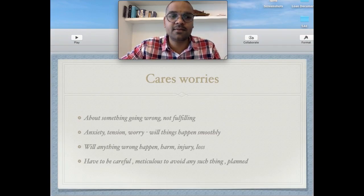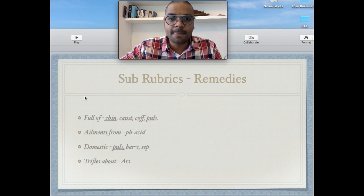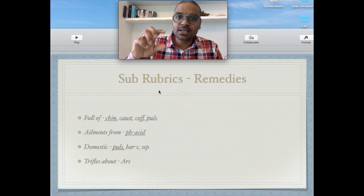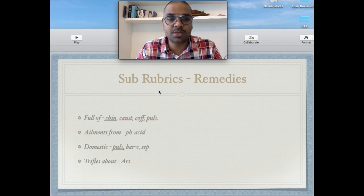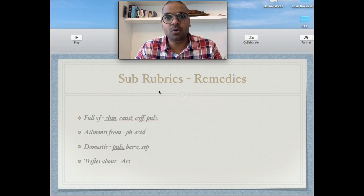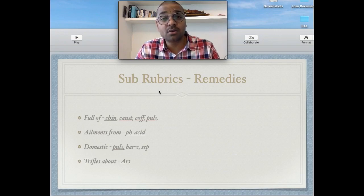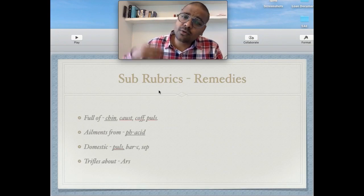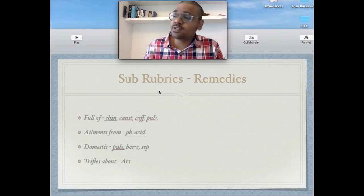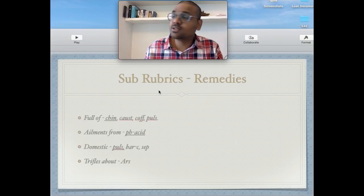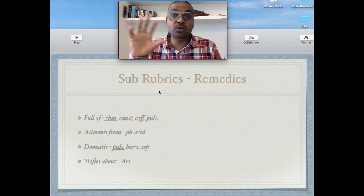This is when we use this rubric — when we see patients talking like this. There are no remedies directly in the rubric 'Cares,' but there are various sub-rubrics in the 'Cares' rubric in Kent's repertory. The remedies are given in those sub-rubrics. The first sub-rubric is 'Cares, Full of' — always full of, totally worried, always thinking of these things only. His mind is full of worries only; he does not think of anything else. Everything he does, he is worried about. The top remedy given is China.